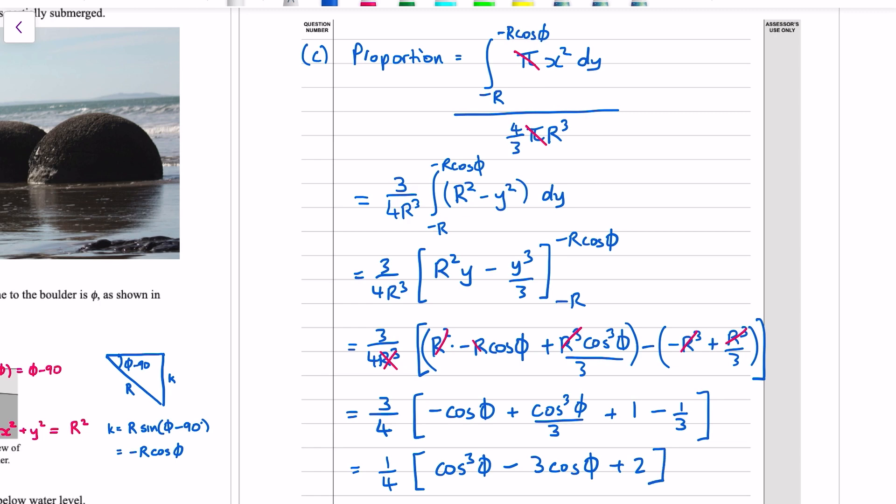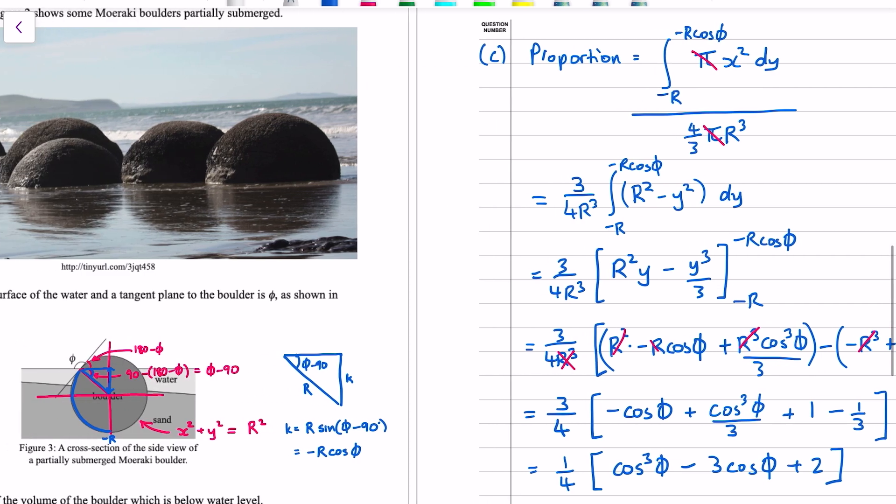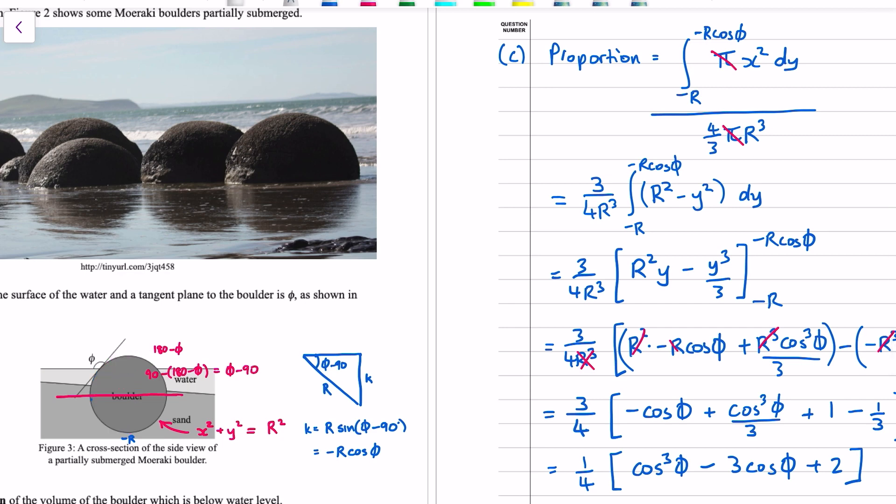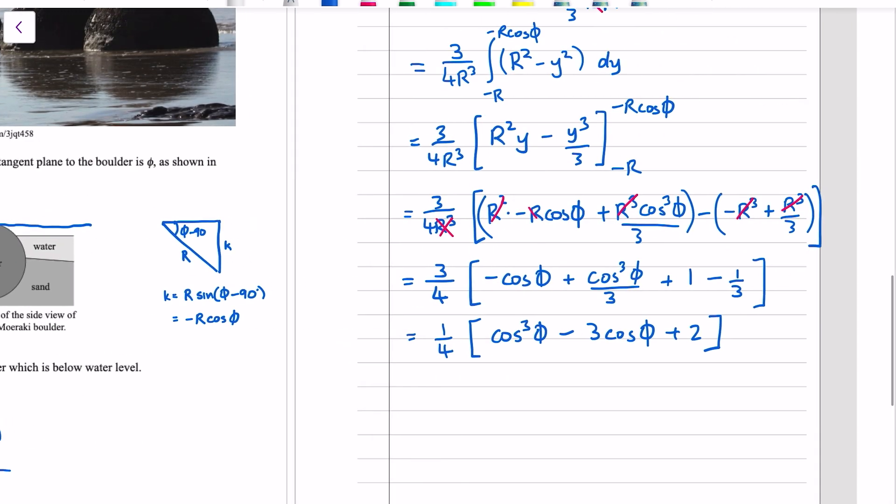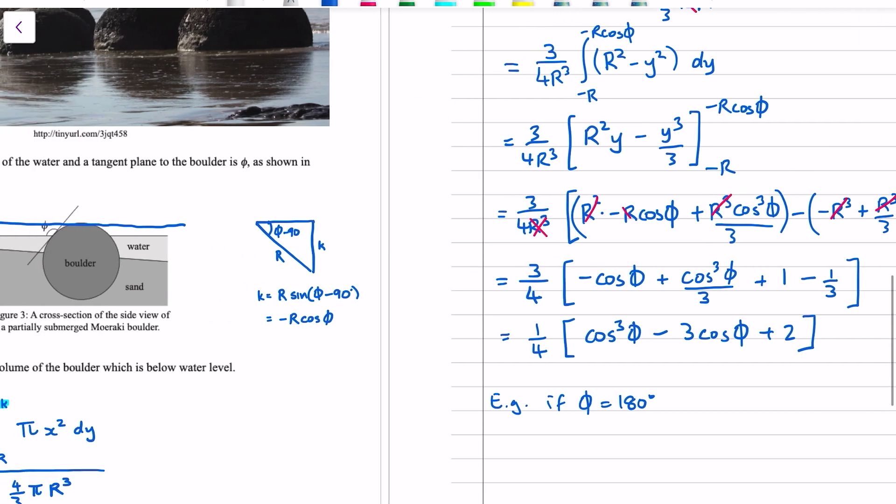All righty. So that's apparently the proportion. And we can test it. It depends on φ, which kind of makes sense, because otherwise they wouldn't have put a φ in the problem. But if we test it at its extremes. So for example, if the water line went all the way up to the top, then the whole boulder is submerged. And φ would be equal to 180 degrees. And they do this in the mark schedule. E.g., if φ equals 180 degrees, the proportion that we work out should come out to be equal to one, 100%, right?